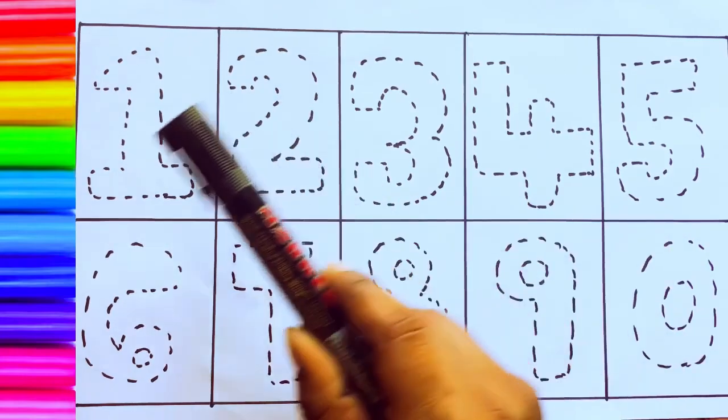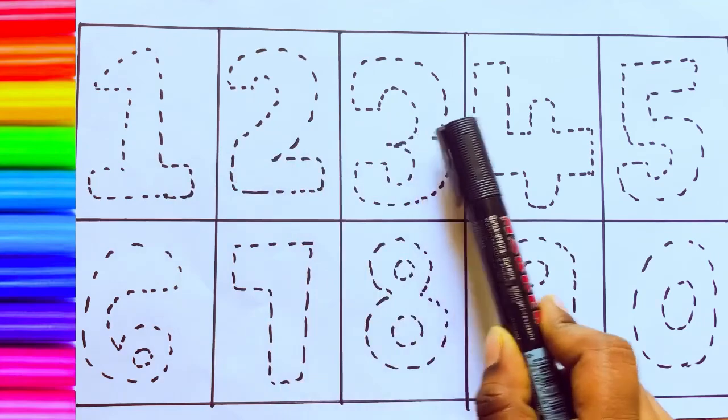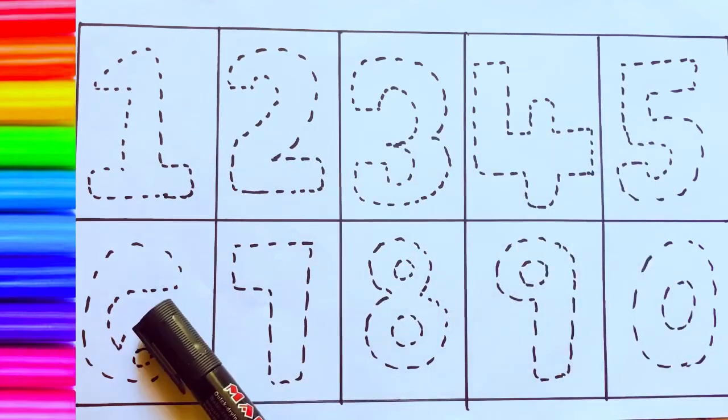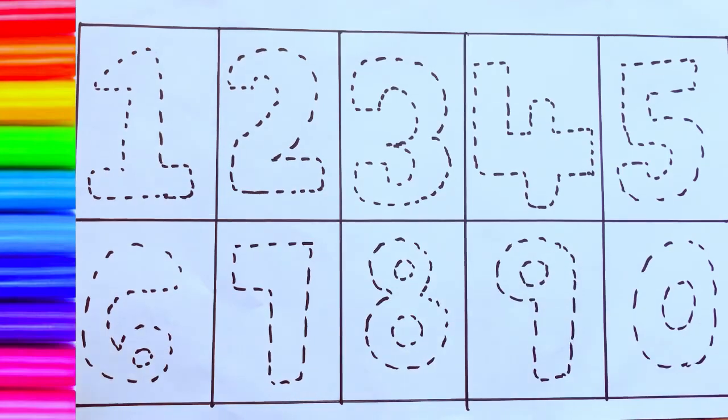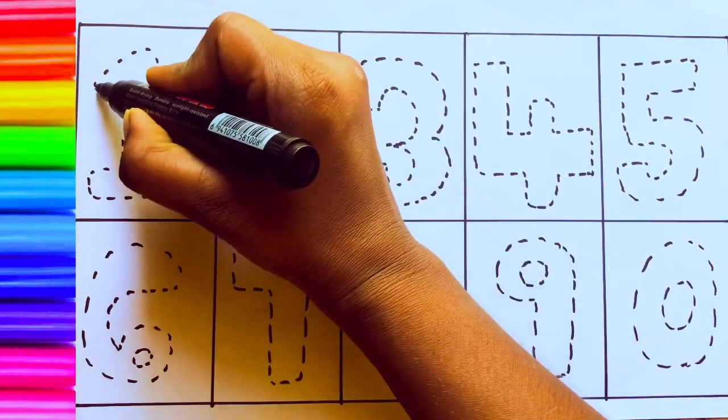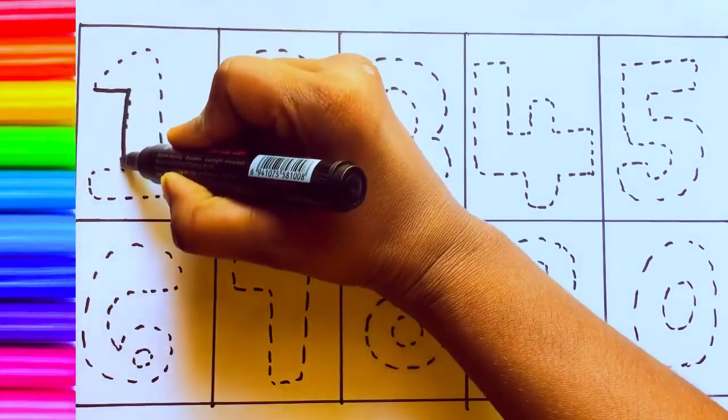Numbers 1, 2, 3, 4, 5, 6, 7, 8, 9, 10, 0. Okay, let's try a thick line. Number 1.